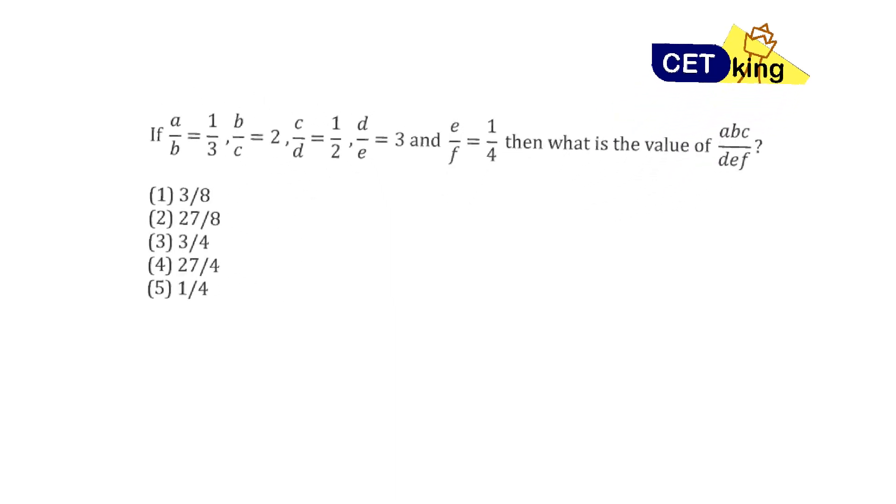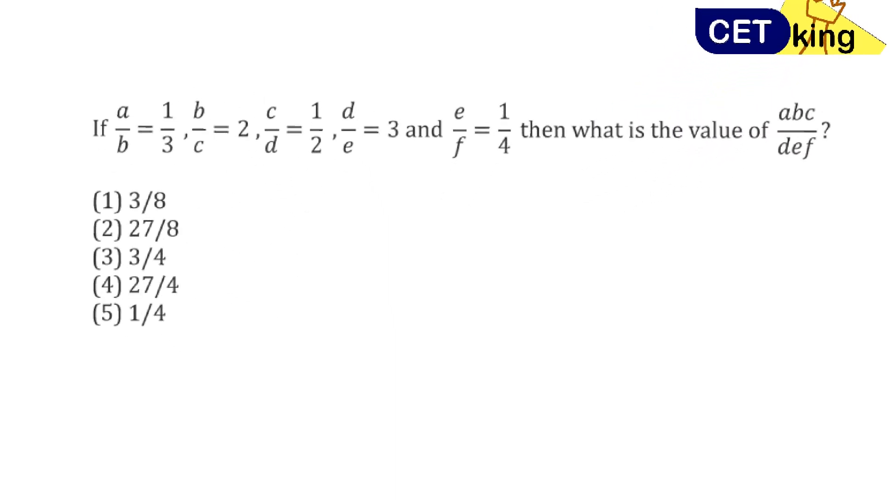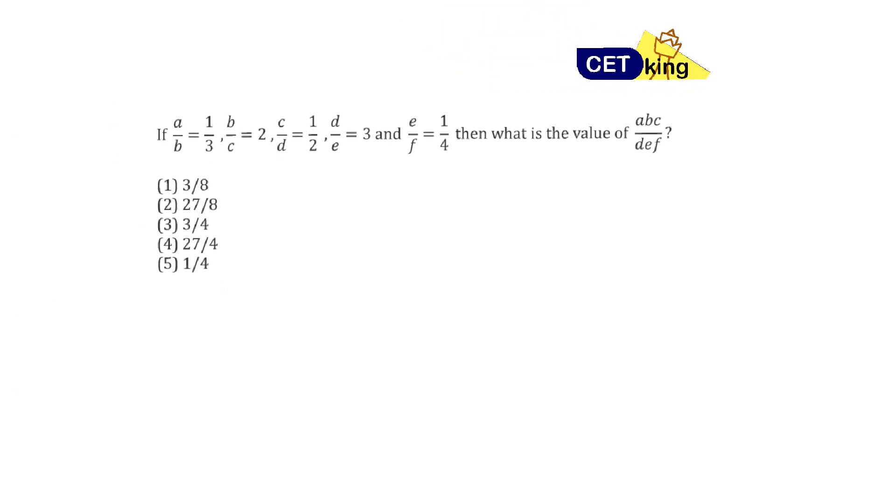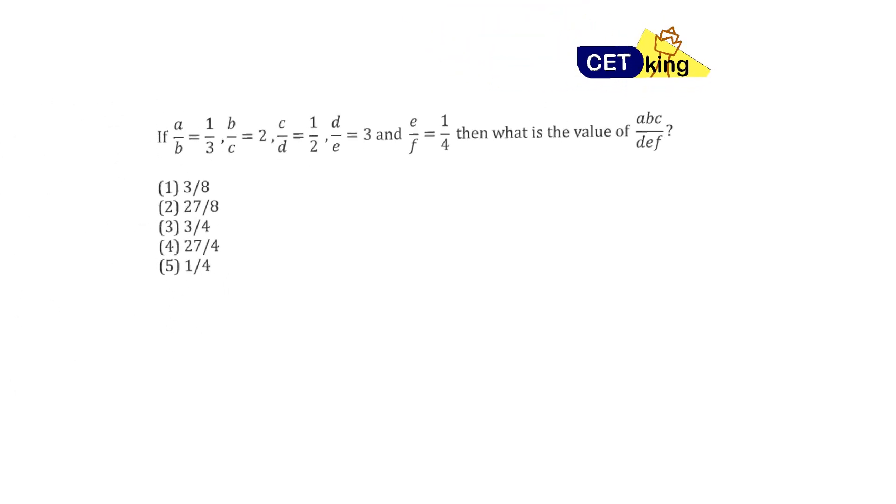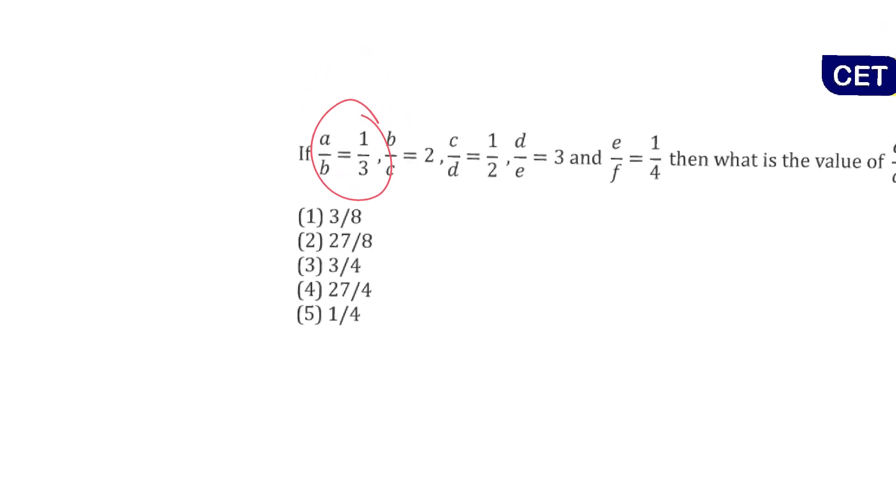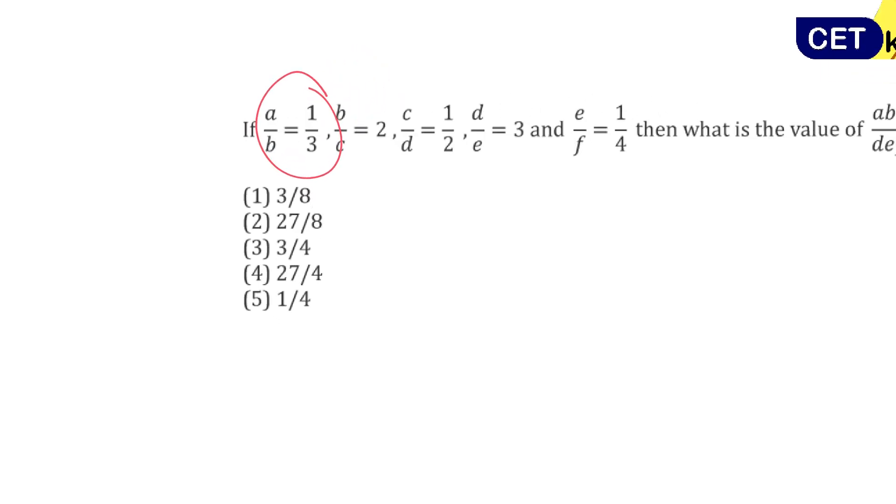Don't trust. A by B, B by C, C by D, find the value of A, B, C divided by D, E, F. Method number 1, I can put everything equal to K, find out everything in terms of K and solve this question. Method number 2, assume some value of A and B. Let's assume A to be 1, B to be 3, and find out everybody C, D, E, F, G in terms of A, B, C. I could have solved this question easily.